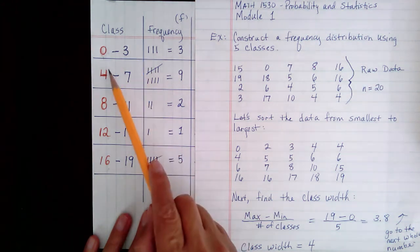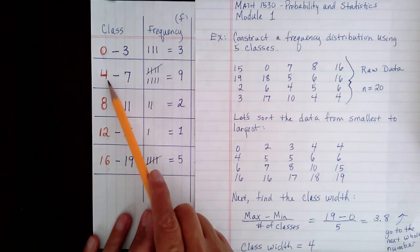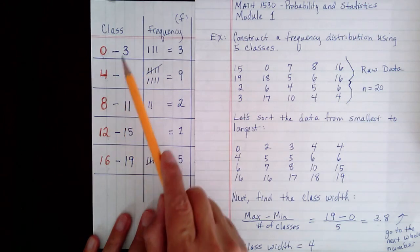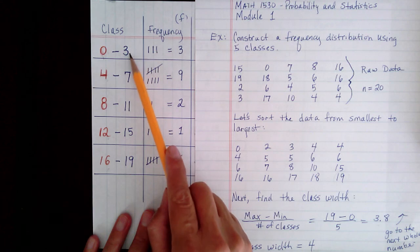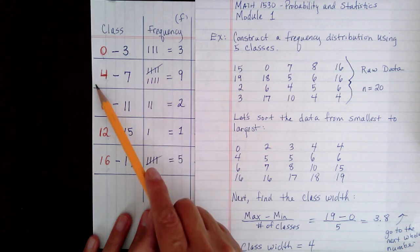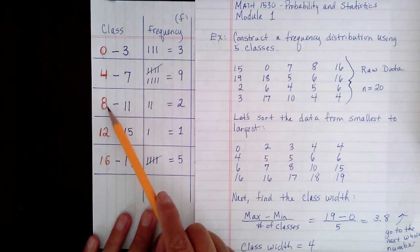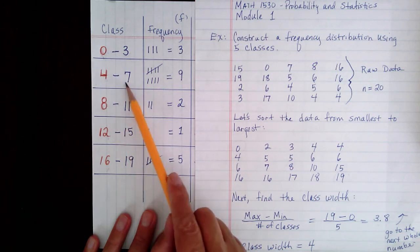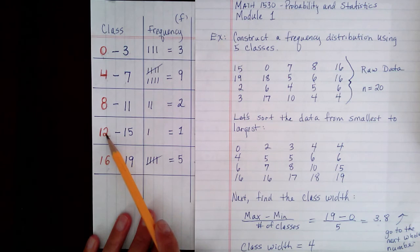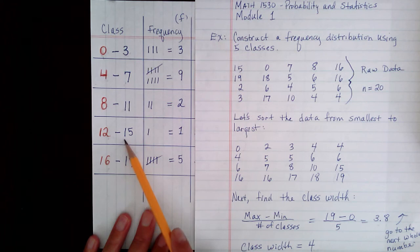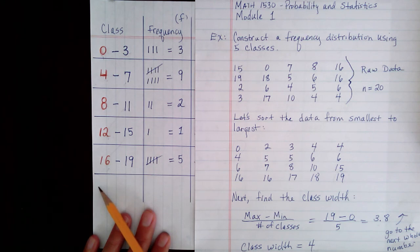Now, to get your upper limits, you simply subtract 1 from the next class's lower limit and put it in the previous class's upper limit. So 4 minus 1 is 3. 8 minus 1 is 7. 12 minus 1 is 11. 16 minus 1 is 15. Now, if we had had another class here, we would have added 4 to 16 to get 20. And 20 minus 1 is 19. Okay, so that's how you find your class limits.